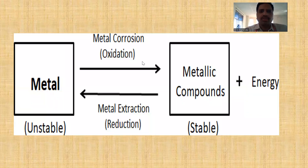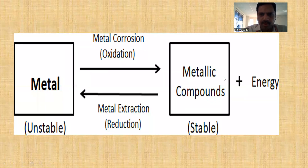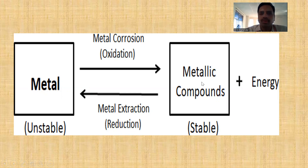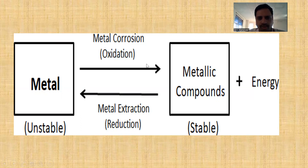This is the corrosion process. This metal will undergo oxidation, which is called the formation of metallic compounds, and releases an amount of energy. This metallic compound is in the form of metallic ore. When we extract the metal from its ore, that process is called reduction. Metal in its pure form is unstable; metal in its metallic compounds is stable. This metal always tries to go into its original state, and that process is called corrosion — technically referred to as oxidation.